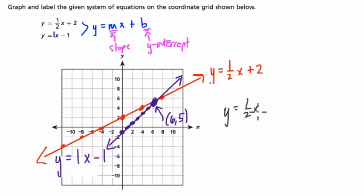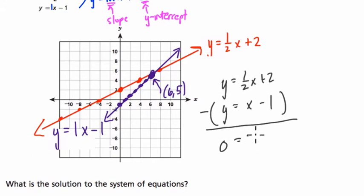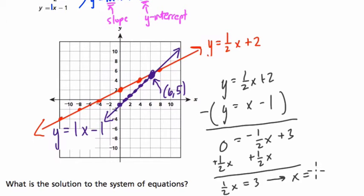In the first equation, y equals 1 half x plus 2. In the second equation, y equals x minus 1. I'm going to essentially eliminate some variables here. So what I'm going to do is subtract the second equation from the first. y minus y is 0. 1 half x minus x is negative 1 half x. 2 minus negative 1 is really 2 plus 1, or 3. And then we'll solve for x. We'll add 1 half x to both sides to get rid of that negative sign. And now I know that 1 half x equals 3. Multiply both sides by 2. x will equal 6.